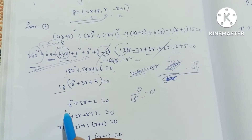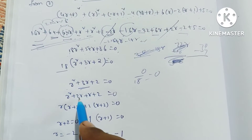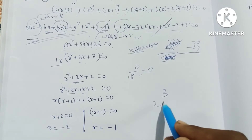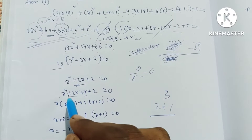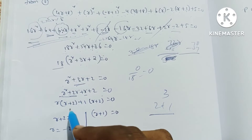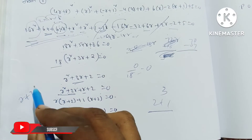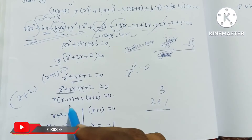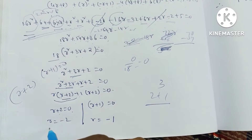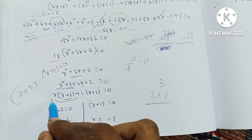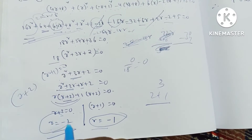Factorizing r squared plus 3r plus 2: r squared plus 2r plus r plus 2, so r(r plus 2) plus 1(r plus 2) is equal to (r plus 2)(r plus 1) is equal to 0. So r plus 2 is equal to 0, giving r is equal to minus 2. Same, r plus 1 is equal to 0, giving r is equal to minus 1. So r values are minus 2 and minus 1.